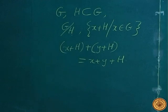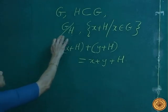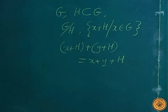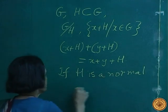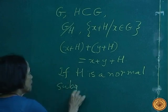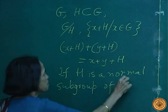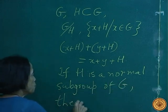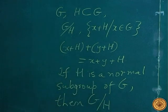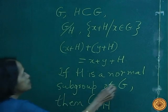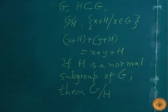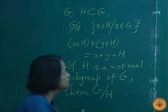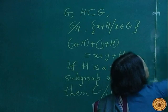Under this binary operation, is the set of cosets G by H a group? It is not always so. But if H is a normal subgroup of G, then G by H — the set of cosets — becomes a group under this induced addition. Now let us carry similar ideas to a ring R.